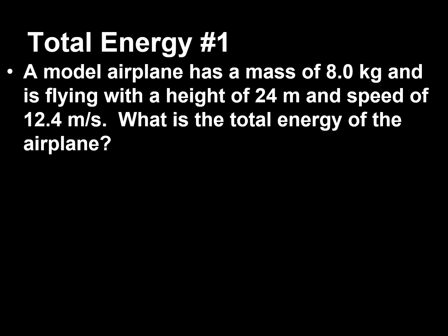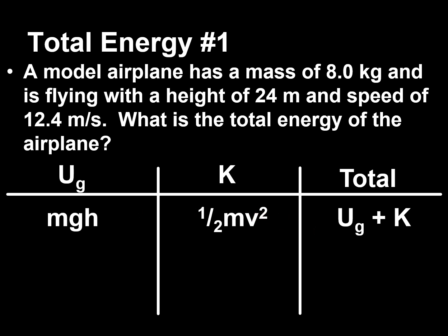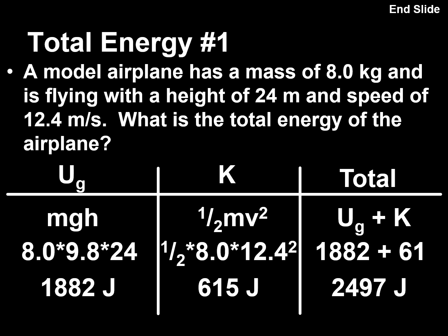Let's look at some examples. First, a model airplane has a mass of 8 kilograms, flying at a height of 24 meters and a speed of 12.4 meters per second. What's the total energy? Gravitational potential energy: 8 × 9.8 × 24 = 1,882 joules. Kinetic energy: ½ × 8 × 12.4² = 615 joules. Total energy: 1,882 + 615 = 2,497 joules.